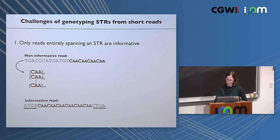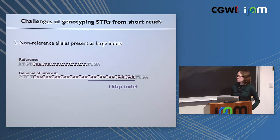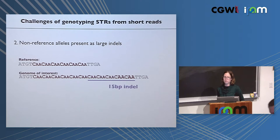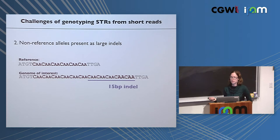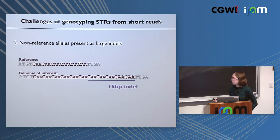Another challenge is that large differences in repeat number from the reference genome present as big indels. Until recently, five additional copies of a trinucleotide repeat — a 15 base pair indel — might get filtered by an aligner because it's too far from the reference, either thrown away or misaligned to another region of the genome that has a similar repeat.